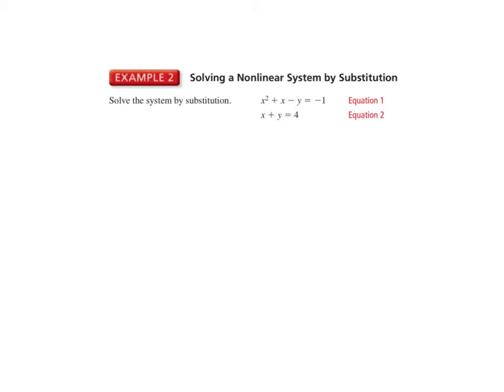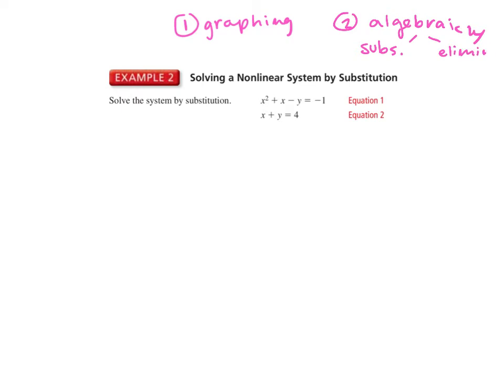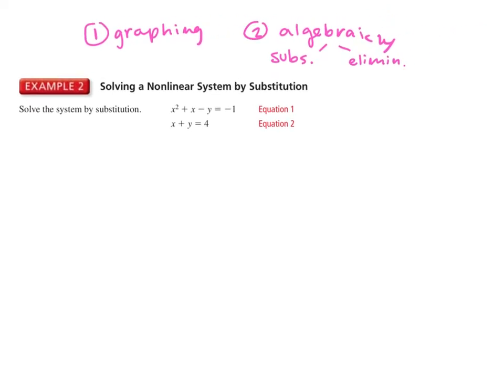There are three different ways that we can solve these systems of nonlinear equations. One is by graphing — we're going to skip graphing for now, but I'll go over the questions that deal with graphing in the homework. The other way is algebraically, which can either be by substitution or by elimination. Today we're going to focus on the two algebraic ways.